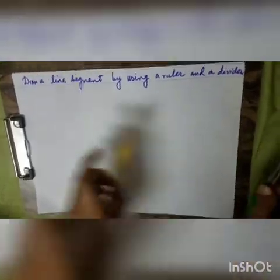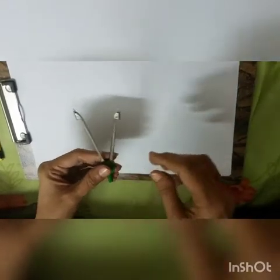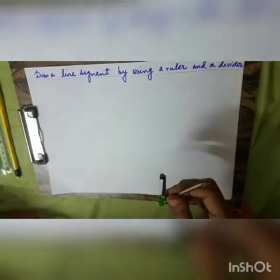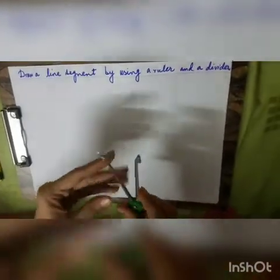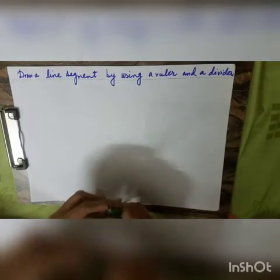Now we are going to focus on what a divider is. It is similar to a compass, but it has a pair of pointer ends — a first pointer end and a second pointer end. It is used to measure or compare the length of a line segment.